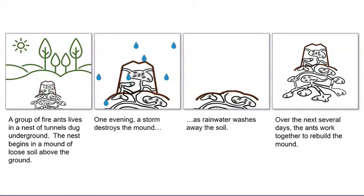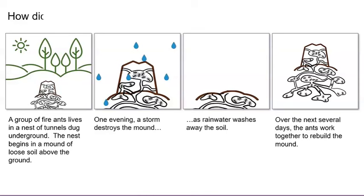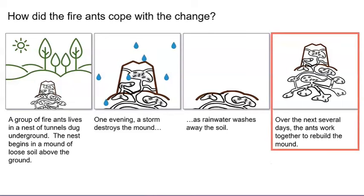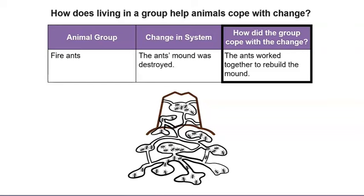Let's look at the text we just read. What was the change in the ant's system? Let's find evidence in the text. Point to the part of the story with text that shows evidence of the change in the system. A storm destroys the mound — the ants' mound, an important part of their nest, was destroyed. How did the fire ants cope with the change? The ants worked together to rebuild the mound. By working as a group, the ants could repair their nest. The fire ant system changed when their mound was destroyed, but they coped by working together to rebuild it.